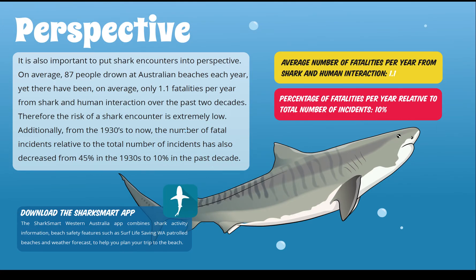It is really important that we put shark encounters into perspective. On average 87 people drown at Australian beaches each year, yet there have been on average only 1.1 fatalities per year from shark and human interactions over the past two decades. Therefore the risk of a shark encounter is extremely low. From the 1930s to now, the number of fatal incidents relative to total incidents has decreased from 45% to 10% in the past decade. We are actually more likely to win the lottery twice than to have a negative encounter with a shark — more people are injured by office chairs, toilets, and falling coconuts than by sharks.